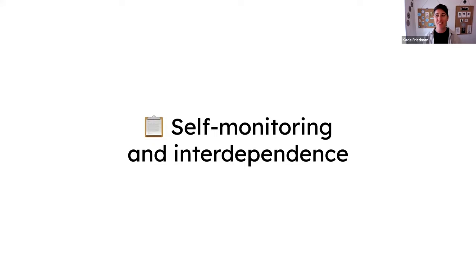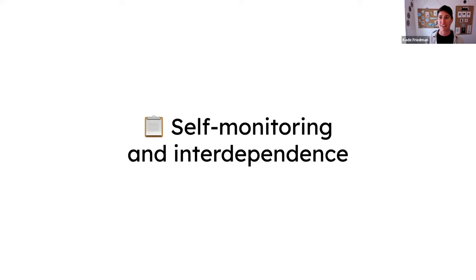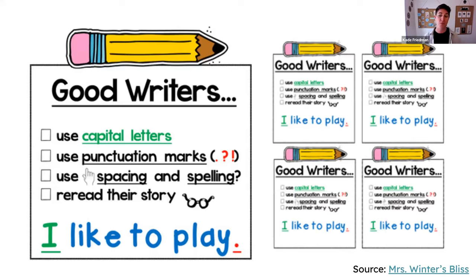We're going to move into kids monitoring themselves and the all-important interdependence. We often talk about independence, but we live in an interdependent world — we all live in community and support each other. So yes, kids are self-monitoring and that is an independent activity, but we also want to foster opportunities to use social skills to support each other when self-monitoring. Here's an example from Mrs. Winter's Bliss — an anchor chart that goes over specific skills kids are working on and uses both color and clear illustrations to give an example of how to use different writing tools. Then taking that same anchor chart and remaking it really small so kids can cut them out and each have their own copy.